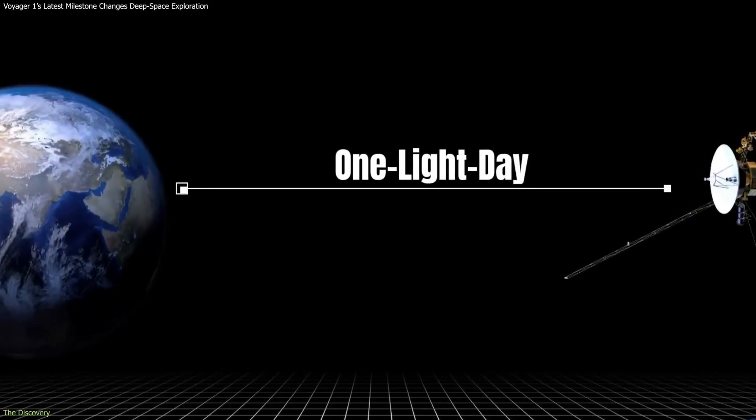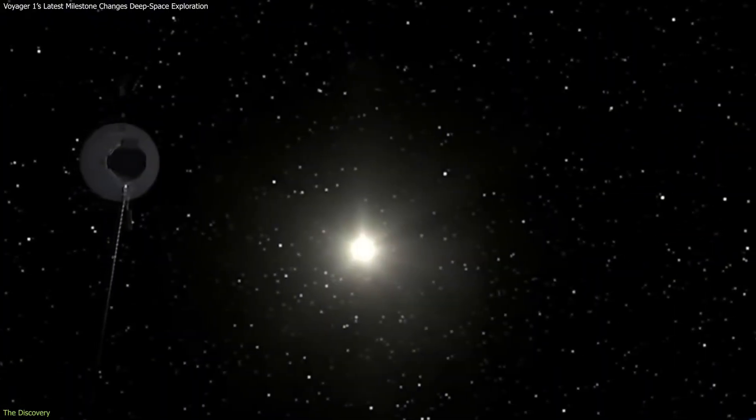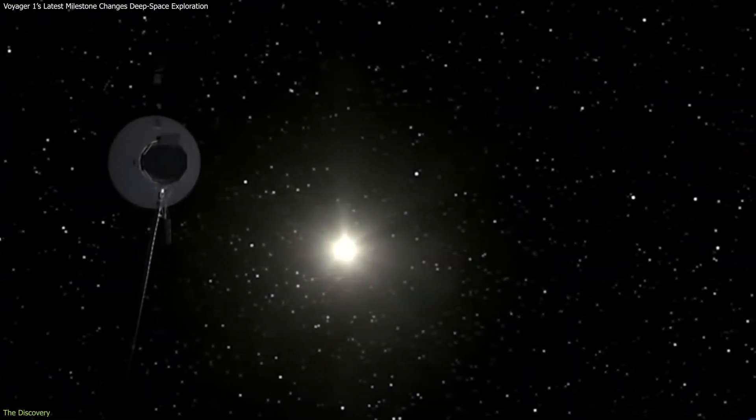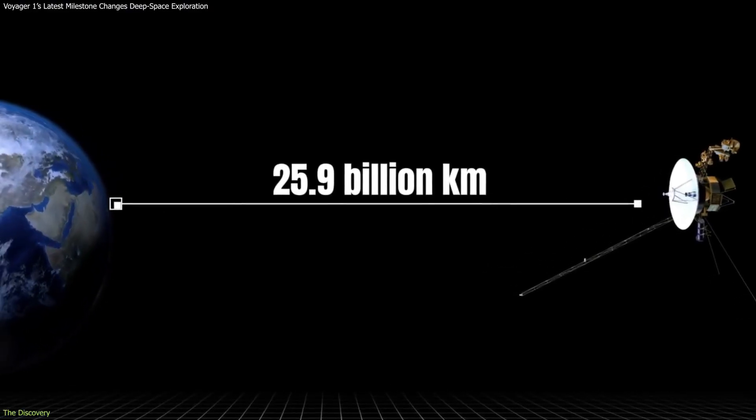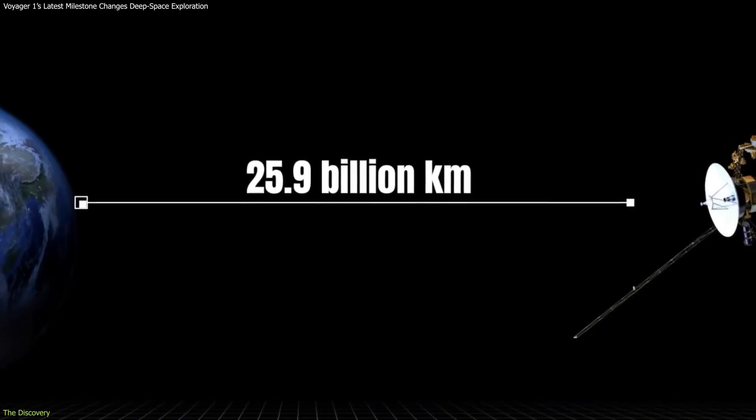Voyager 1's approach to one light day marks a new stage in a mission that has been moving steadily outward since 1977. A light day represents the distance light travels in 24 hours, around 16 billion miles or 26 billion kilometers.